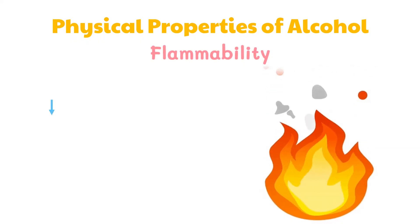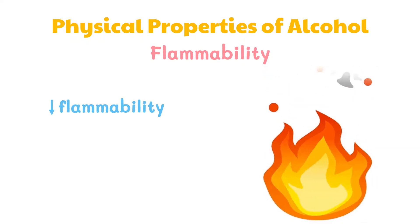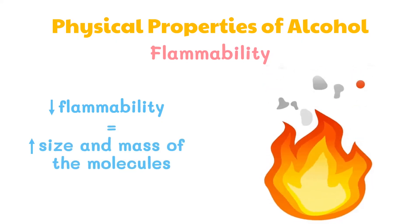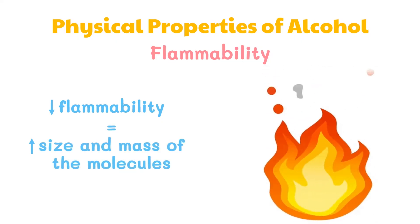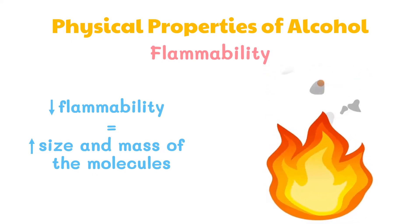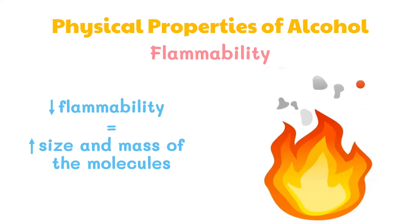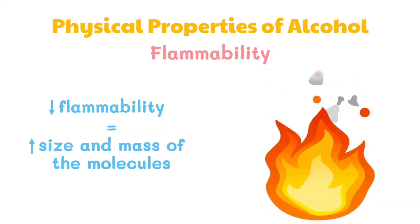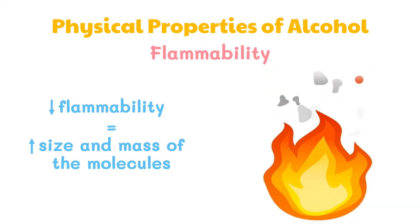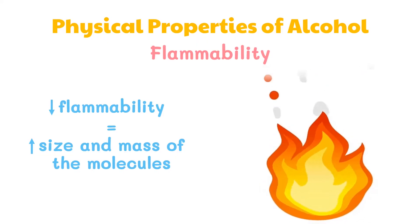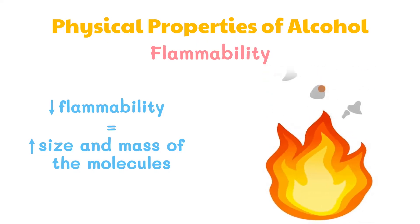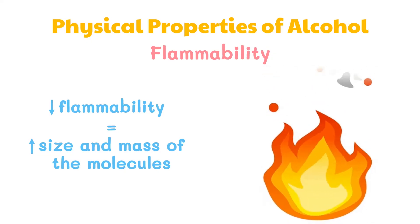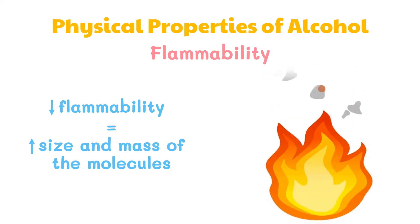The flammability of alcohols decreases as the size and mass of the molecules increases. Combustion breaks the covalent bonds of the molecules. So, as the size and mass of the molecules increases, there are more covalent bonds to break in order to burn that alcohol. Hence, more energy is required to break the bonds. Therefore, the flammability of alcohols decreases as the size and mass of molecules increases.